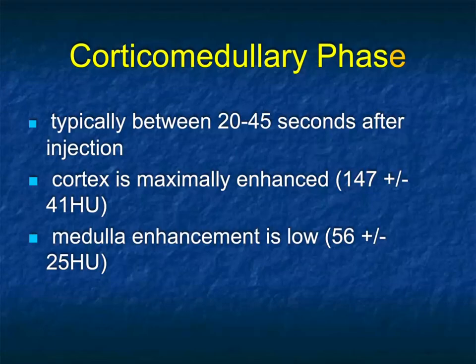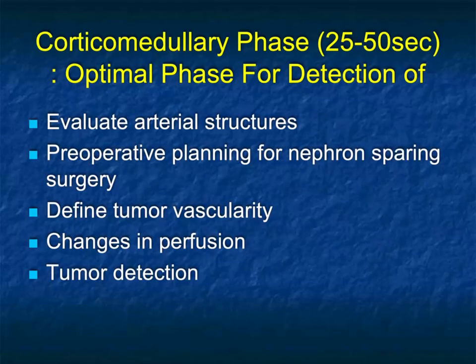The cortical medullary phase is about 30 seconds after injection of contrast. We'd like to inject at 5 cc's per second, 100 to 120 cc's of contrast. It's the time when the cortex is maximally enhanced, reaching about 150 Hounsfield units, and the medullary enhancement is low, under 60 Hounsfield units, so cortex-medullary differentiation is really well seen. It's optimal for evaluating arterial structures and for preoperative planning for nephron-sparing surgery.